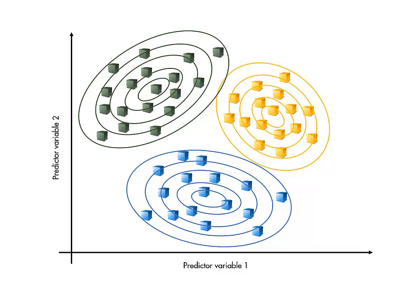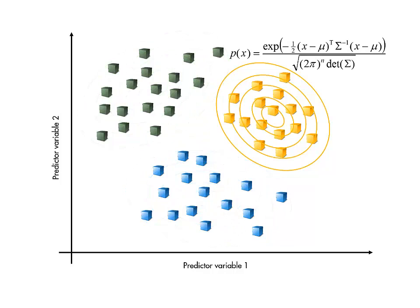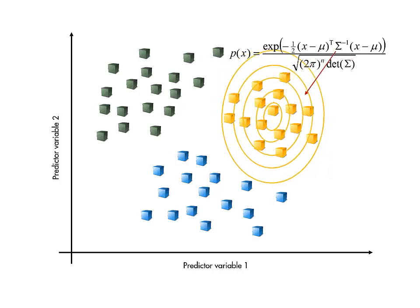Theoretically, we could fit an n-dimensional normal distribution to the observations in each class. This involves calculating the mean vector and covariance matrix for each class. These determine the center and shape of the distribution, respectively.